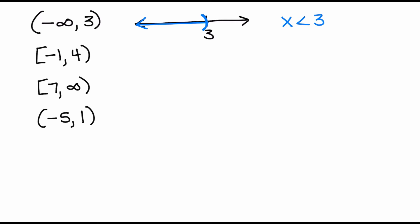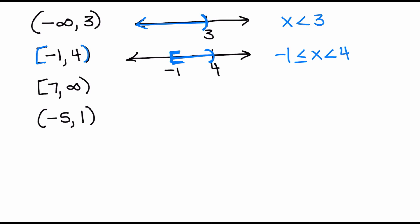The second one goes from negative 1 to positive 4. The bracket is next to negative 1 and there's a parenthesis next to 4. This means I include negative 1 but not the 4 — like a closed circle at negative 1 and an open circle at 4. I shade everything in between. In inequality notation this means I want all numbers less than 4 and greater than or equal to negative 1. Brackets are used for or equal to, parentheses when it's not or equal to.